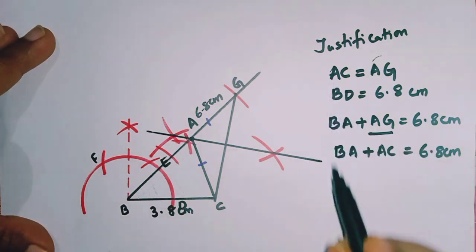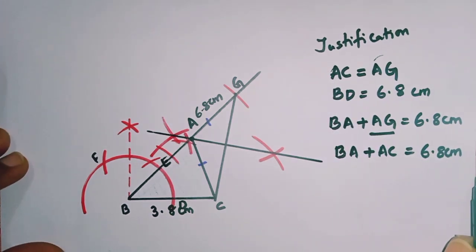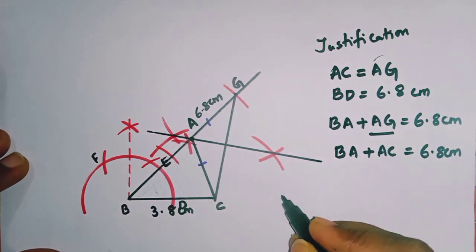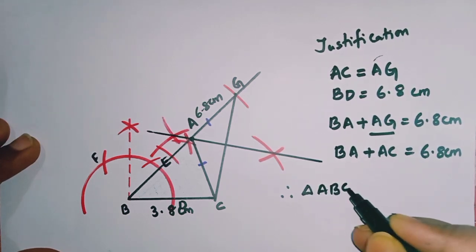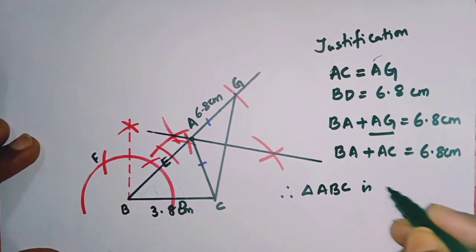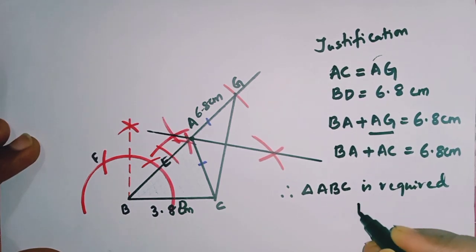Compulsory this justification should be shown. Only then the full marks will be given for your constructions. So therefore, triangle ABC is the required triangle. I have just highlighted to know that this is the required triangle.